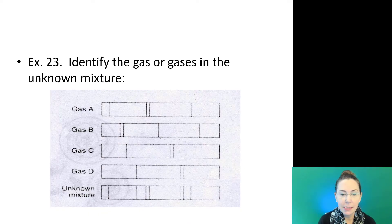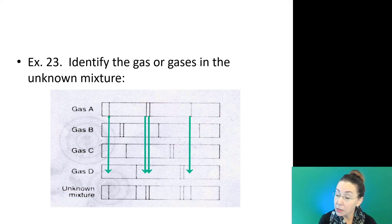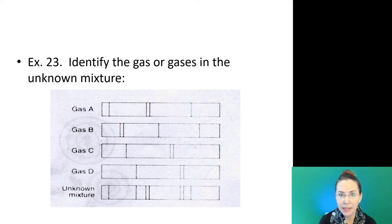For example, let's look at gas A. If we line up the bands in gas A with the bands in the unknown mixture, we can see that every band in gas A also appears in the unknown mixture. But there are bands in the unknown mixture not in gas A. That's fine. They must come from other gases. Let's look at gas B. Gas B definitely can't be in the unknown mixture. If we look at those first two bands that appear close together in gas B, they appear nowhere in the unknown mixture. So they're definitely excluded.